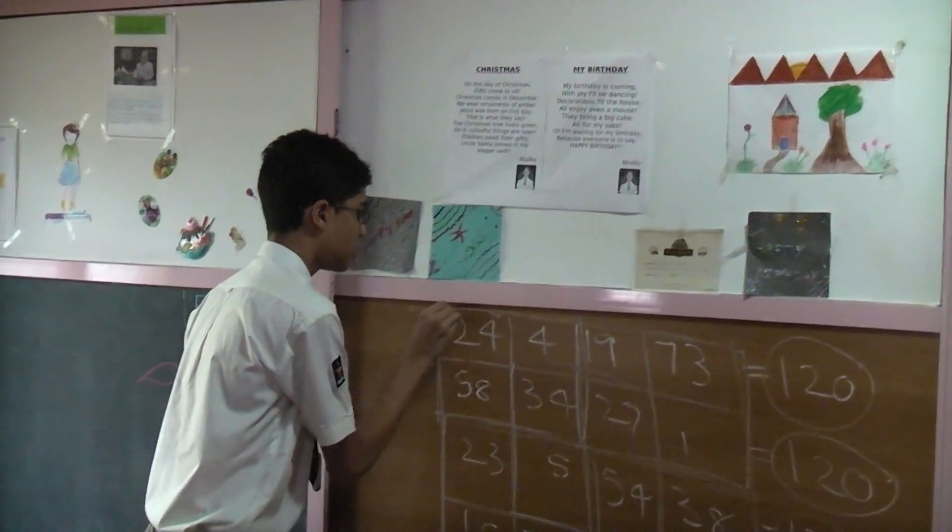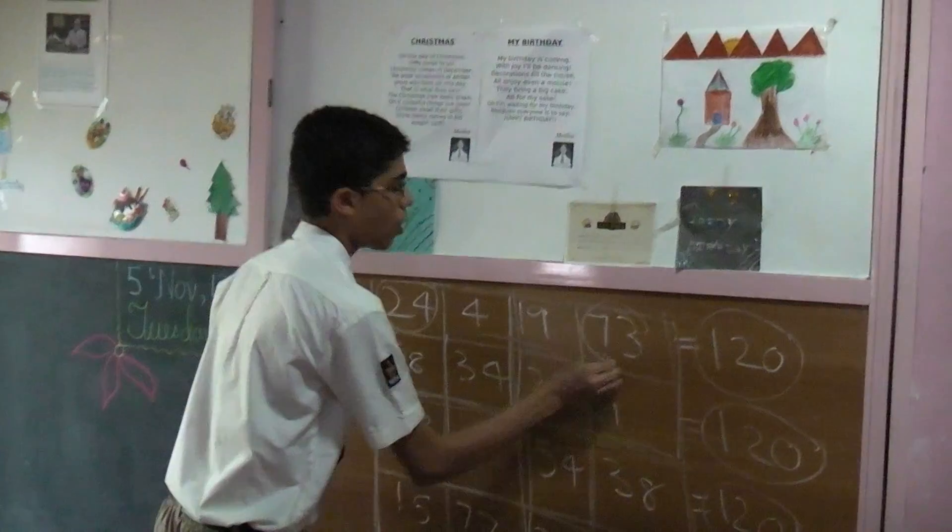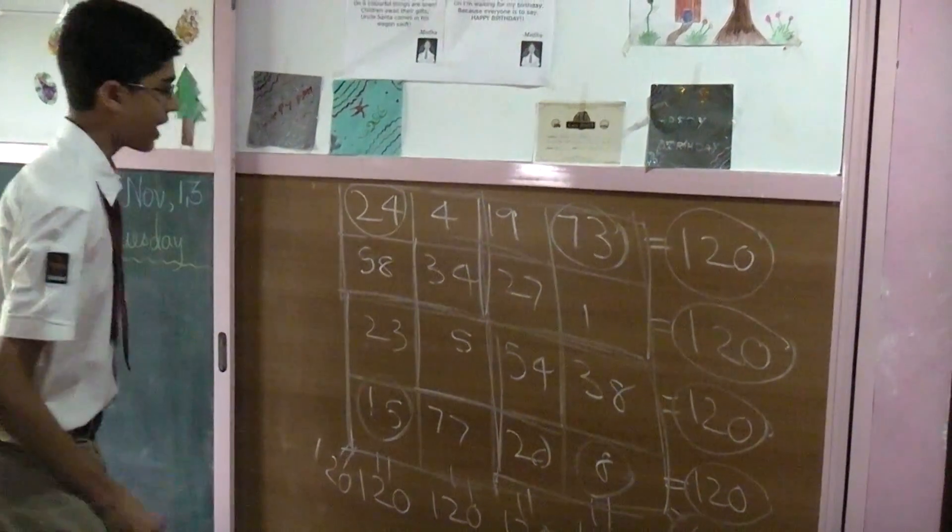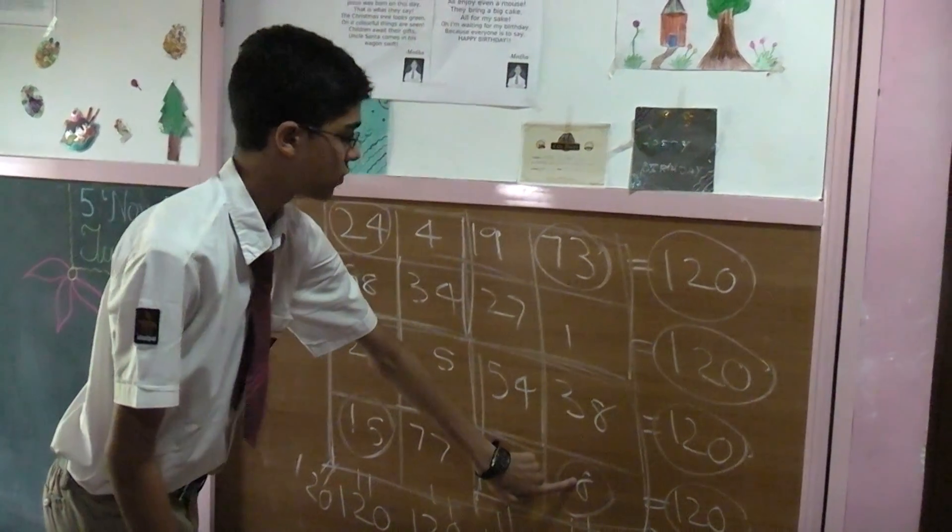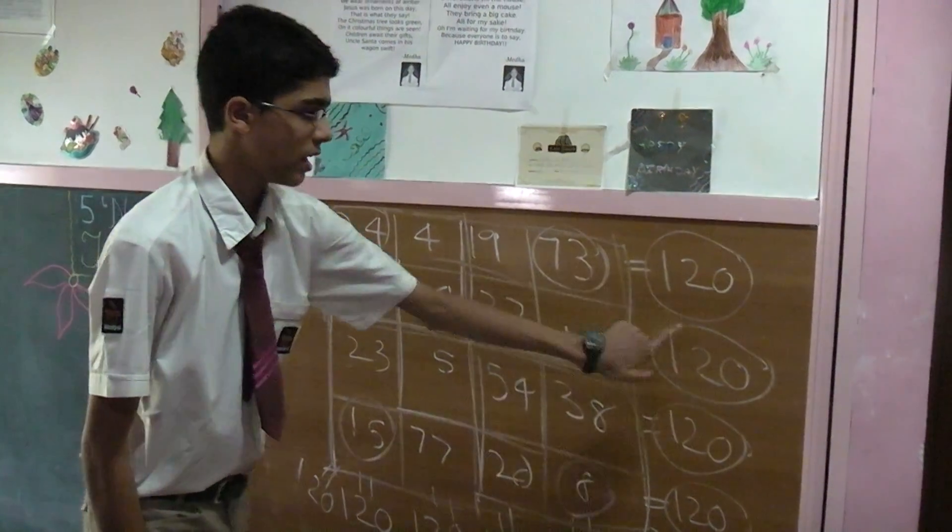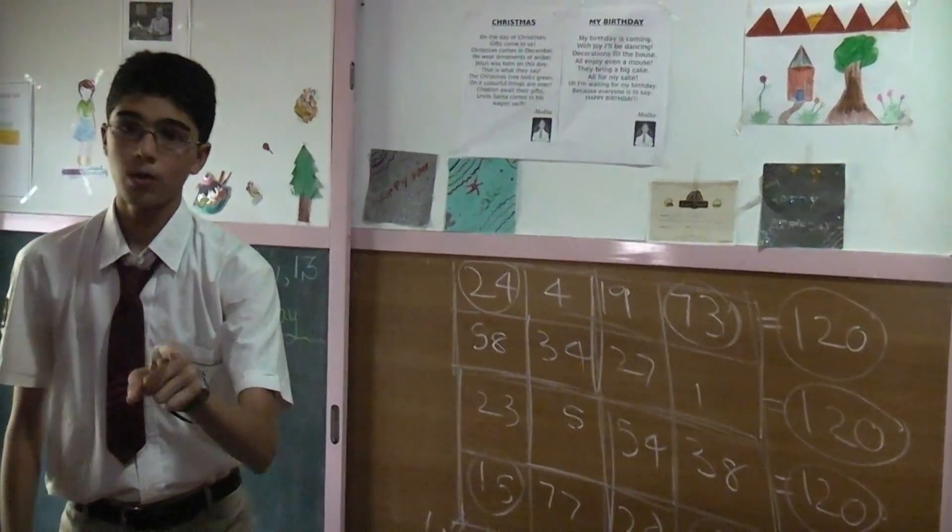So, you add these four numbers in the corner. What do you get? 24 plus 15 is 39, 39 plus 8 is 47, 47 plus 73 is also 120. And not only that,